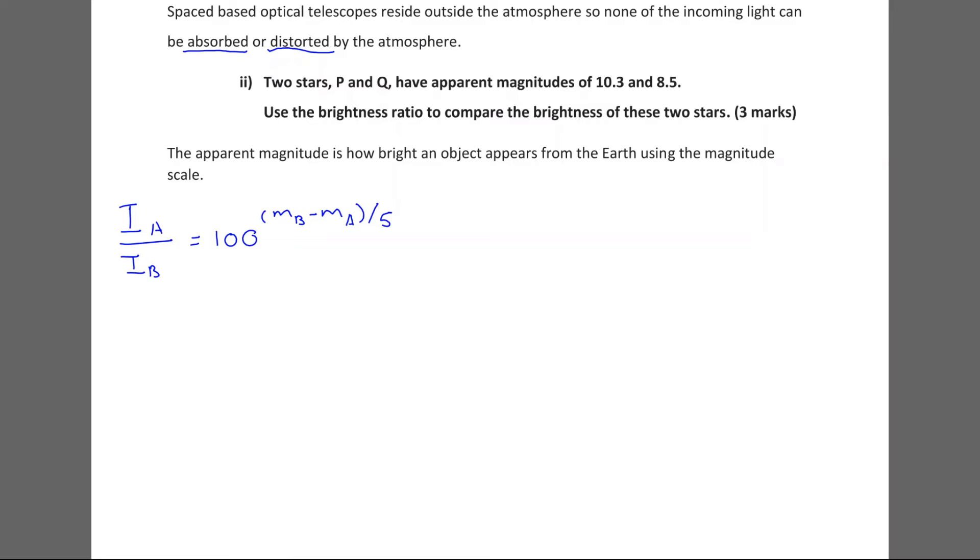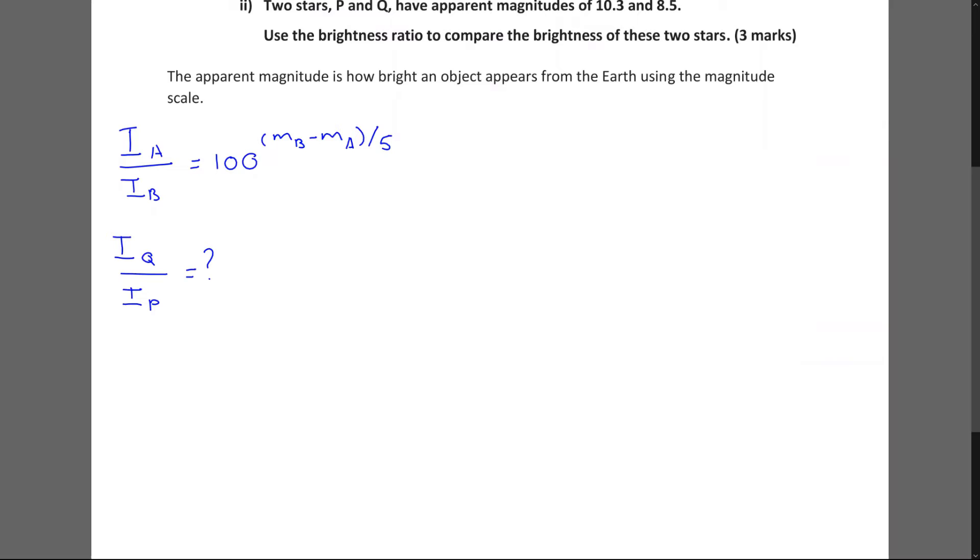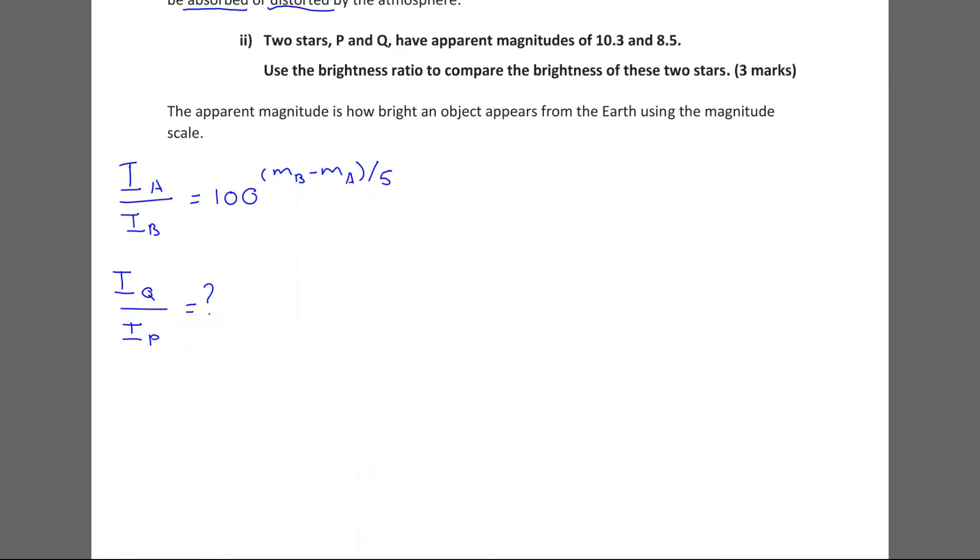The reason the equation looks like this is because it's the division of two logarithmic values. So we're working with that. Now we've got two values here, but we're interested in the stars IQ and IP. So we're going to be interested in the ratio of IQ to IP. So that's going to be the subject of our equation. So we need to know the magnitudes, or the apparent magnitudes of each of those. So mP equals 10.3, and mQ equals 8.5.